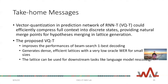The take-home message is: vector quantization in the prediction network of the transducer (VQT) can efficiently compress full context into discrete states, providing natural merge points for hypothesis merging in lattice generation. The proposed VQT improves beam search one-best decoding performance and generates dense, efficient lattices with very low oracle word error rates from small beam sizes. The generated lattice can also be used for downstream tasks such as language model rescoring. Thank you very much for listening to this talk.